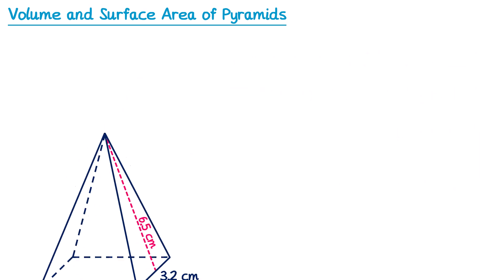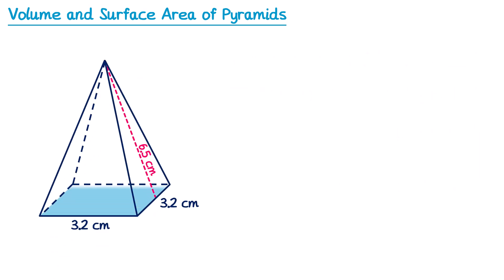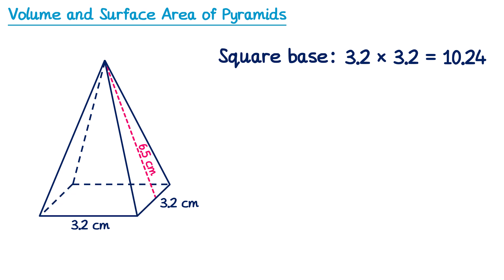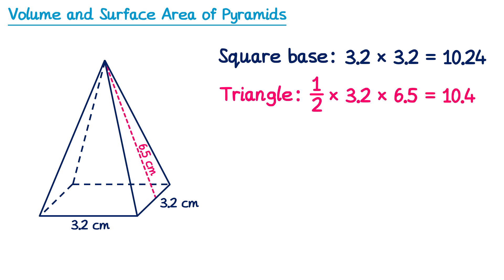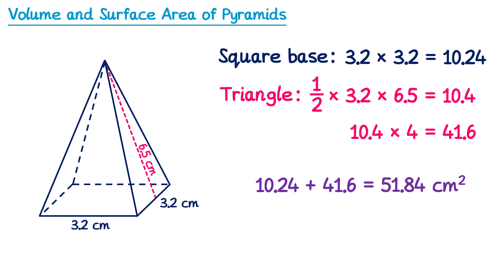Let's try a second example. For this pyramid we'll start with the area of the square base: 3.2 multiplied by 3.2 gives 10.24. Then we'll look at one triangular face: the area is one half multiplied by the base, so 3.2, multiplied by the perpendicular height, 6.5. This gives 10.4. Since there are four of these triangles, we take 10.4 and multiply it by 4, giving 41.6. Adding the square base area, 10.24, and the four triangles, 41.6, gives a total surface area of 51.84 centimetres squared.